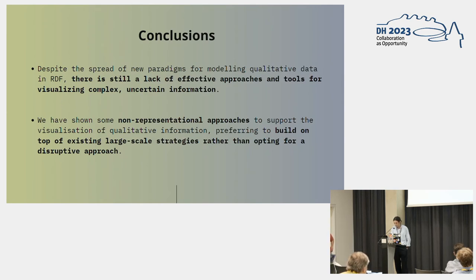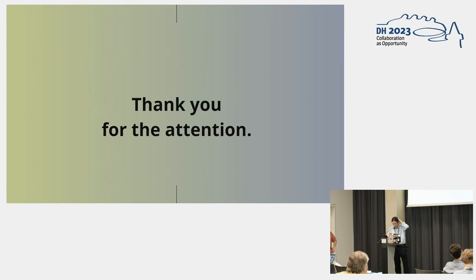In conclusion, while new paradigms for RDF data modeling have spread, there still needs to be more effective approaches for visualizing complex contextual and uncertain information. Hypergraphs, emotional maps, and textual representation expand existing visual metaphors and standards while enabling new ways of exploring datasets and complex information. So non-representational approaches can be adopted without disrupting traditional visualization and by building onto them, especially to represent uncertainty, provenance, and contextual information. And I think that's all. Thank you.